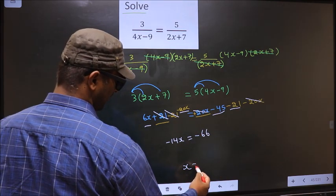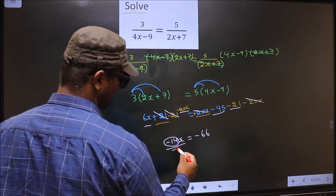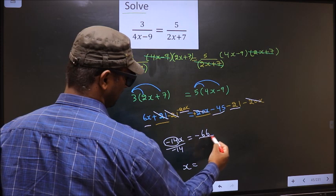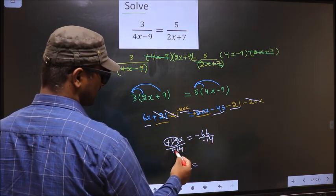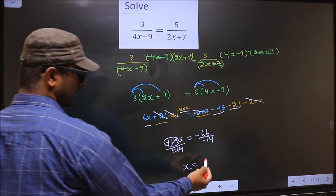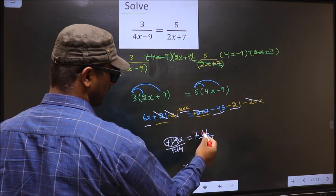Now to get x, we should remove minus 14. To remove minus 14, you divide by minus 14 on both sides. Now here it cancels out, you get x equal to... here the negatives cancel. Now you cancel these numbers in 2 table.